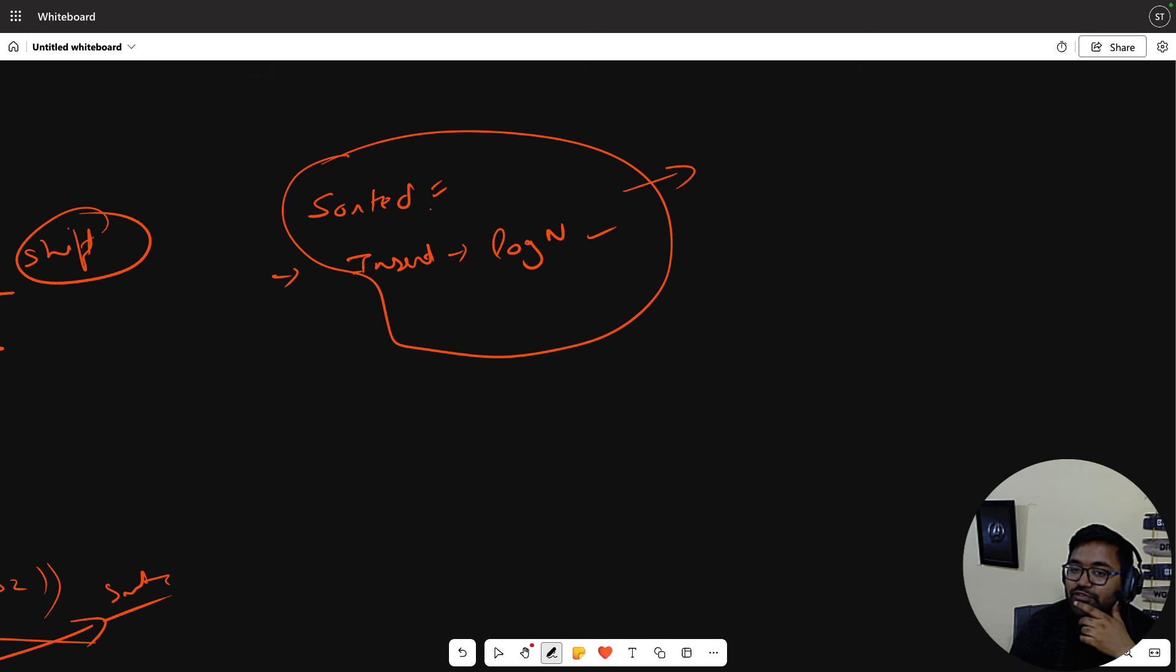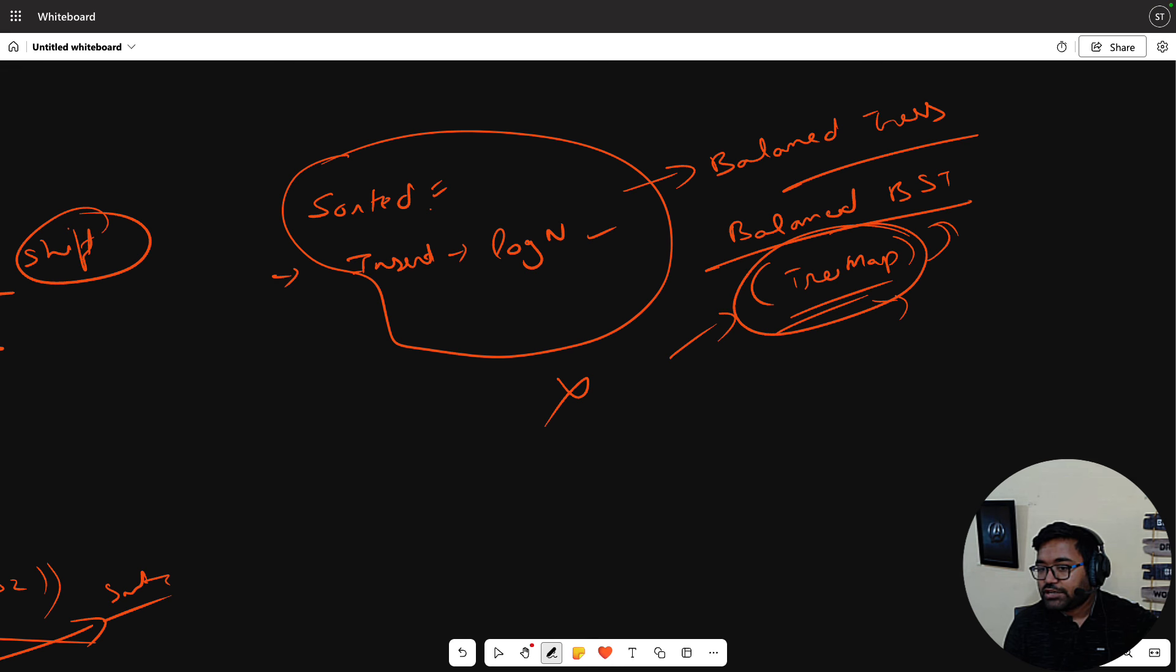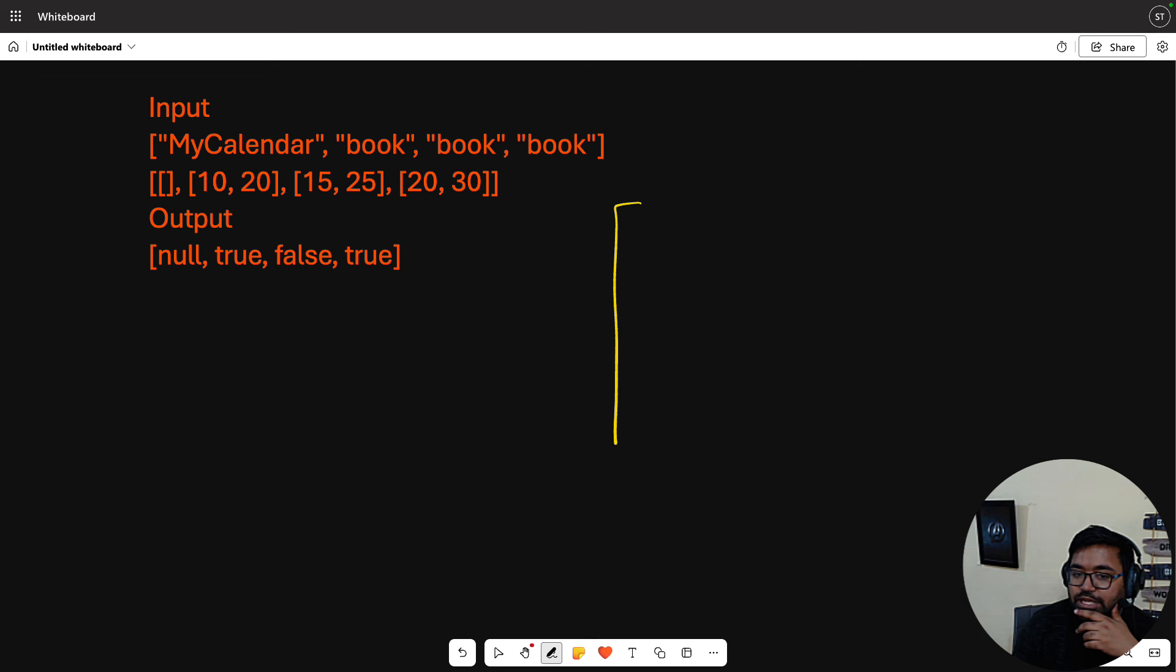So we come to balanced trees, balanced BST. We can use the TreeMap class and our task will be done. TreeMap maintains order. This is a TreeMap.